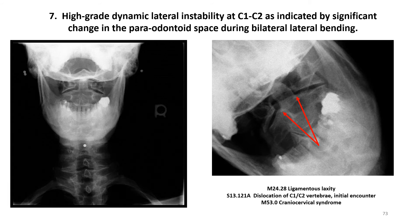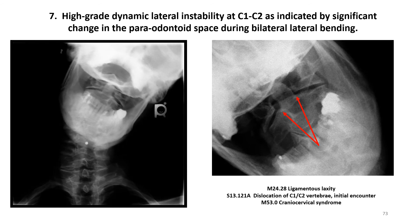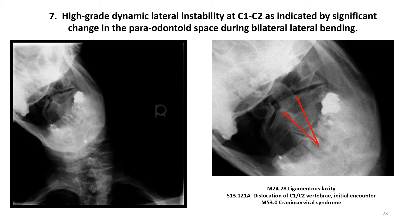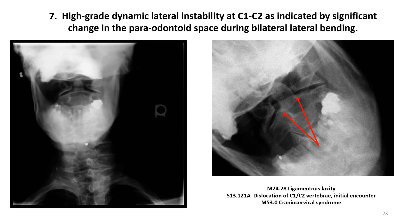Number seven: the asymmetry of the paraodontoid spaces as revealed by application of Taniguchi's formula was more important than the lateral offsets of C1 on C2. The diagnosis of ligamentous laxity is applicable, and the dislocation code for C1-C2 is being used. As noted in the indications, cognitive symptoms are part of the patient's problem, so craniocervical syndrome is also listed. With left lateral flexion, the paraodontoid spaces change radically — doing the math resulted in a Taniguchi score of 18.96%, which is consistent with high-grade dynamic lateral instability of C1-C2. Referral to a neurosurgeon for evaluation is strongly recommended in cases like this.